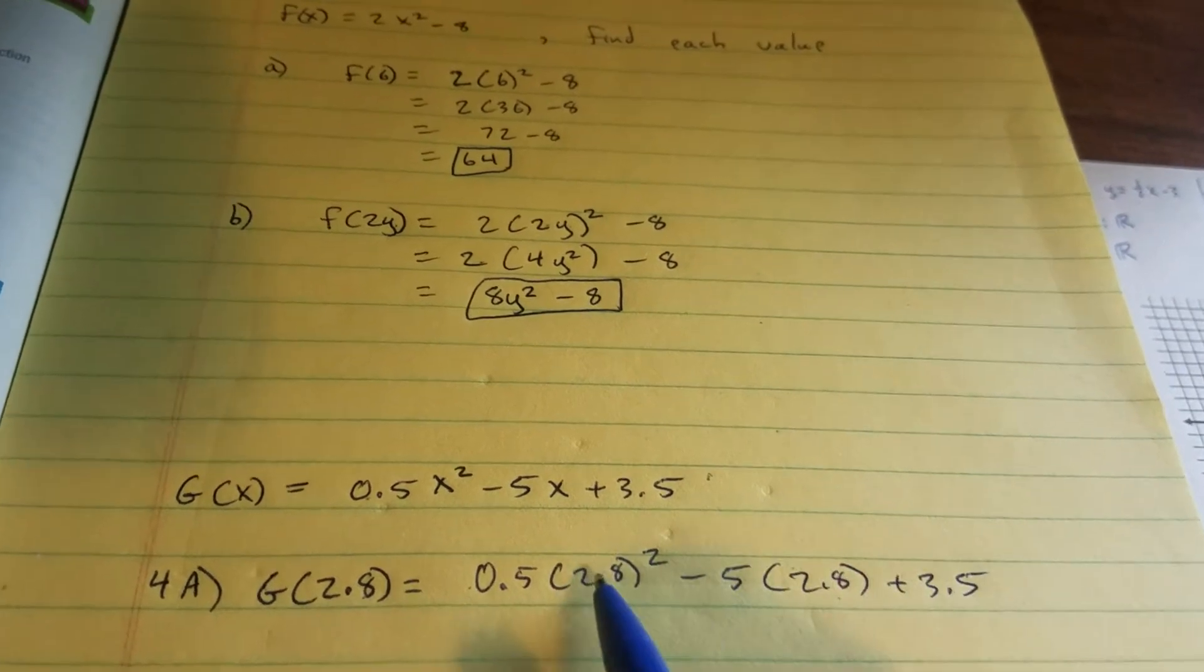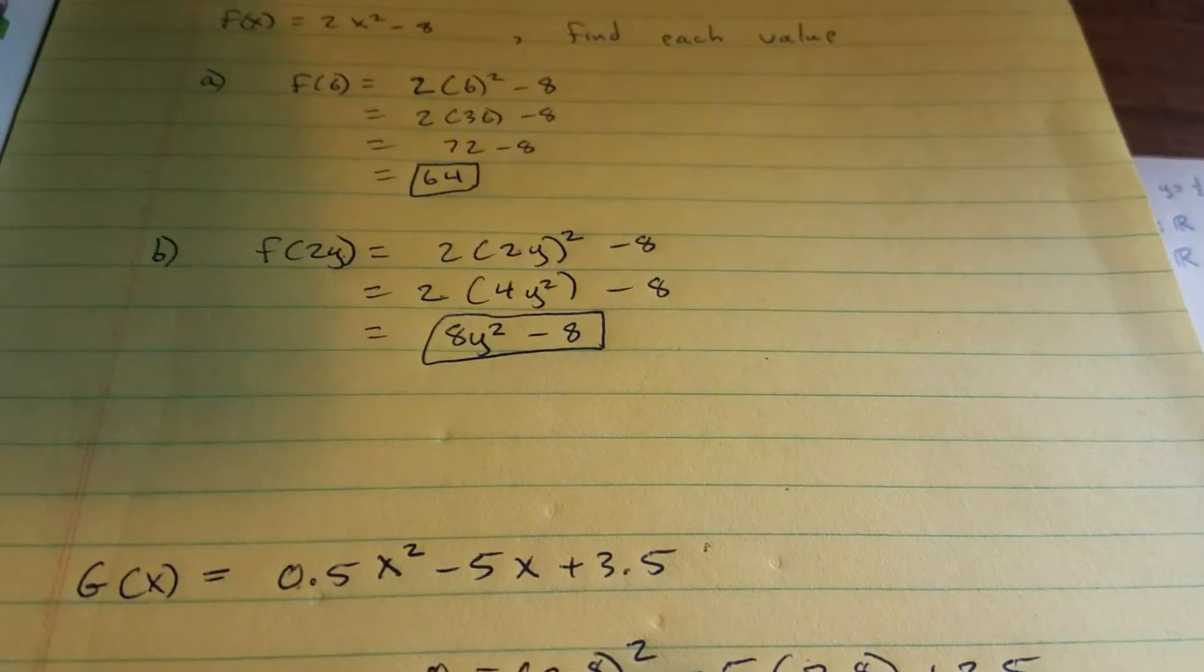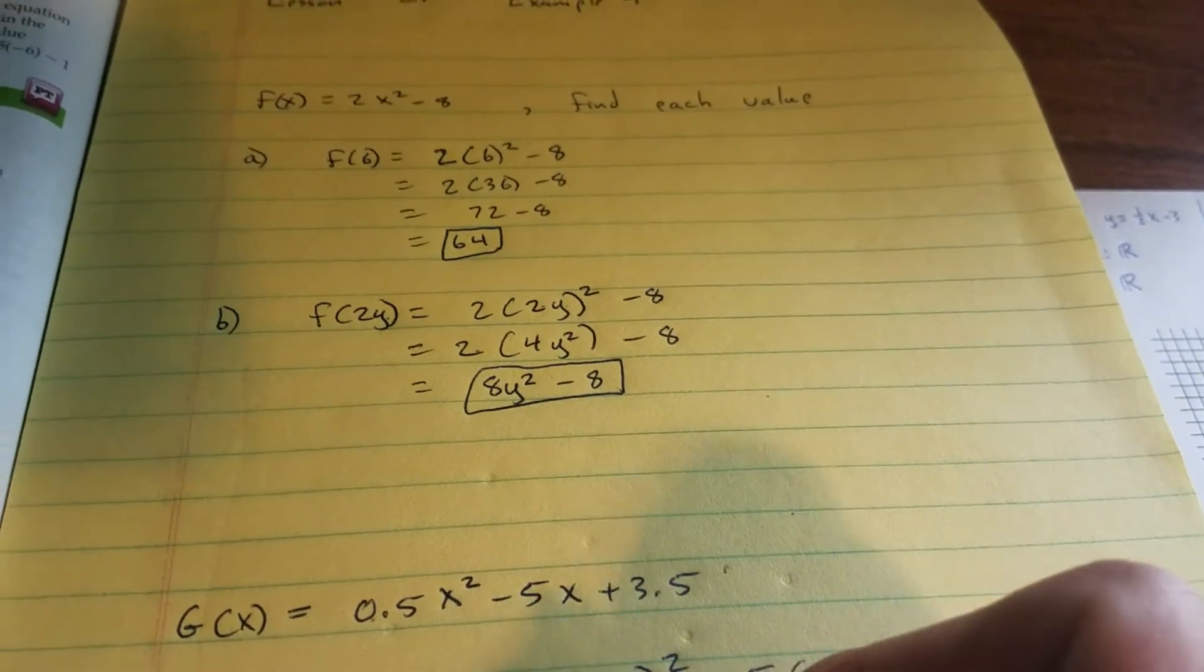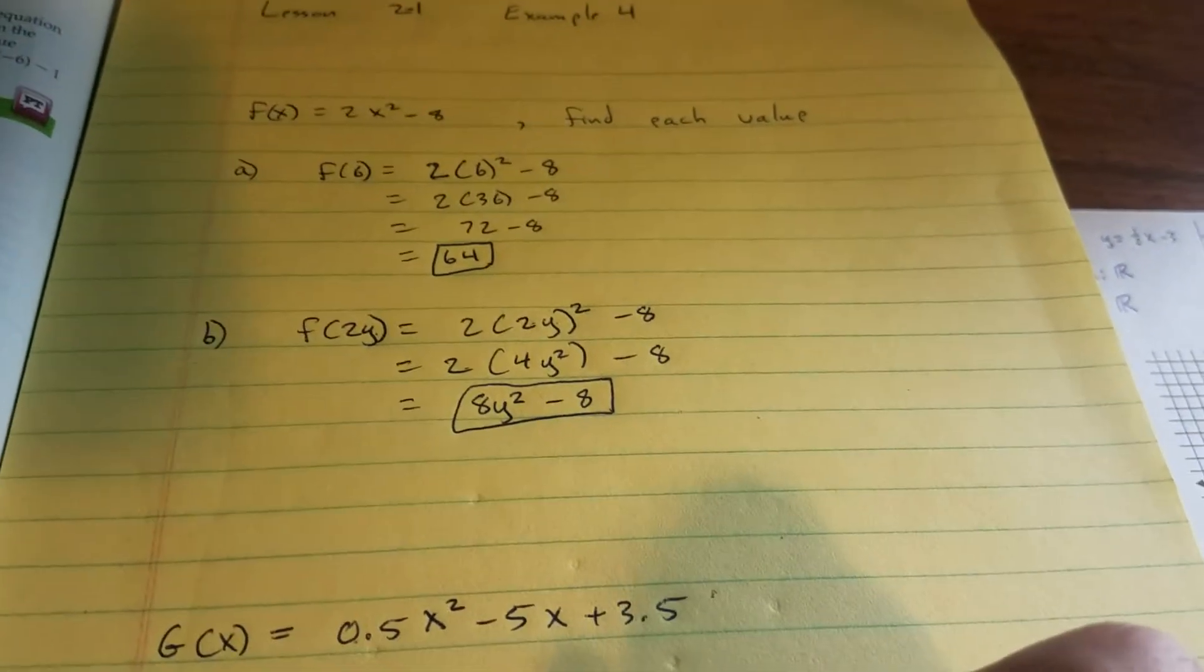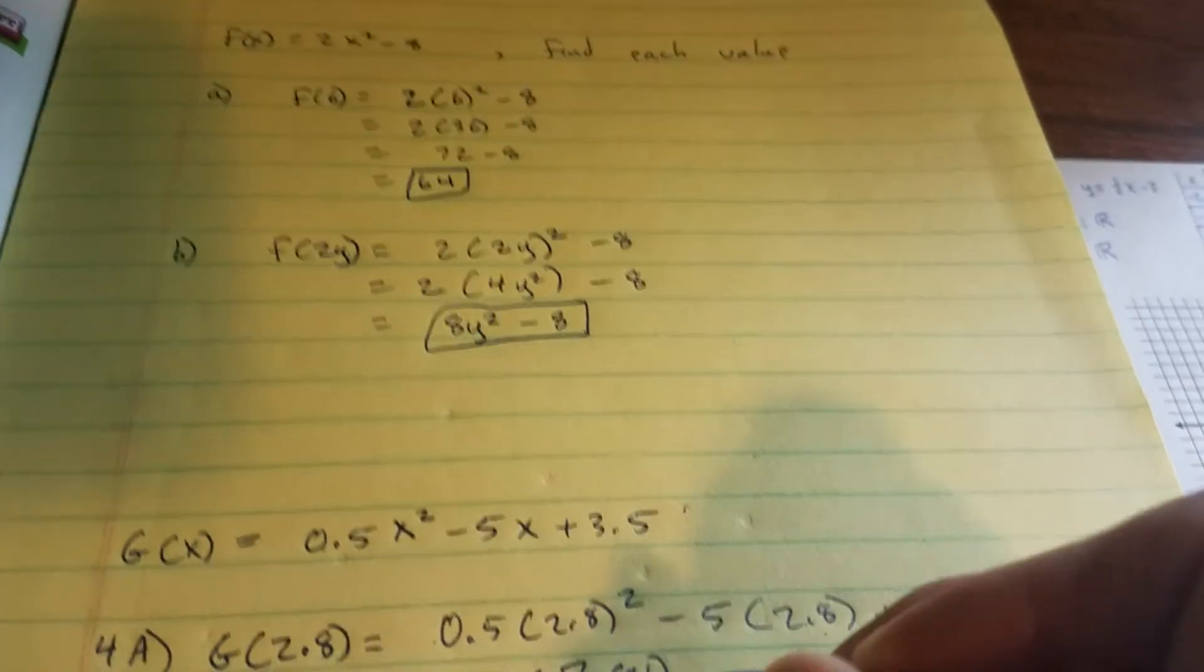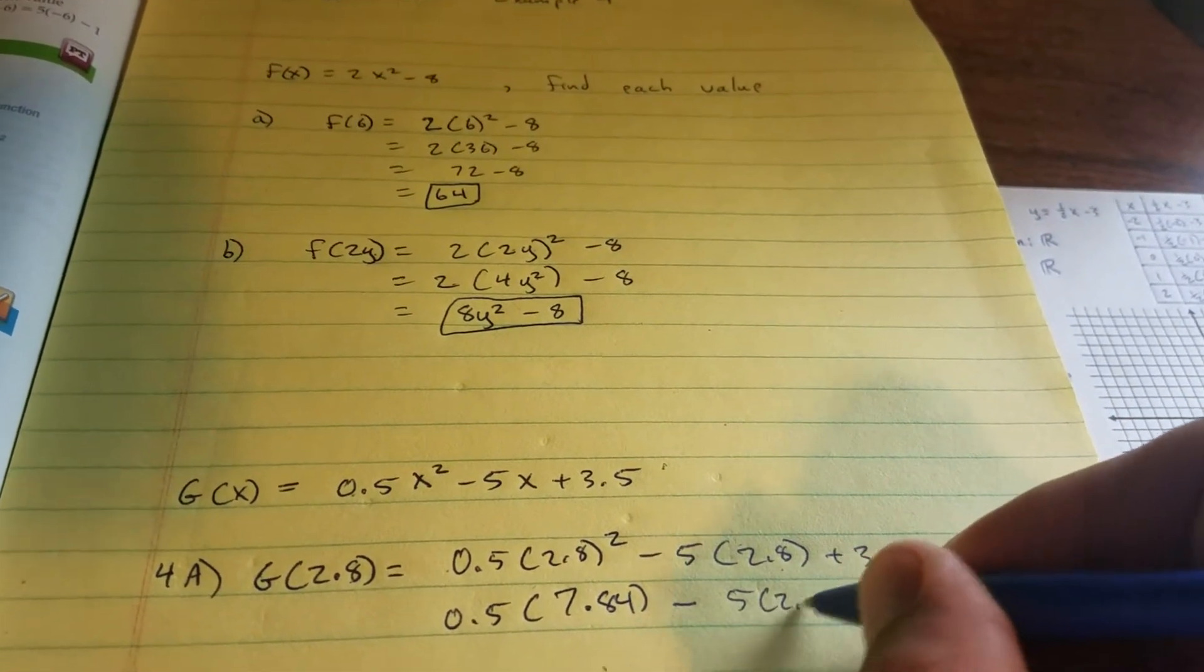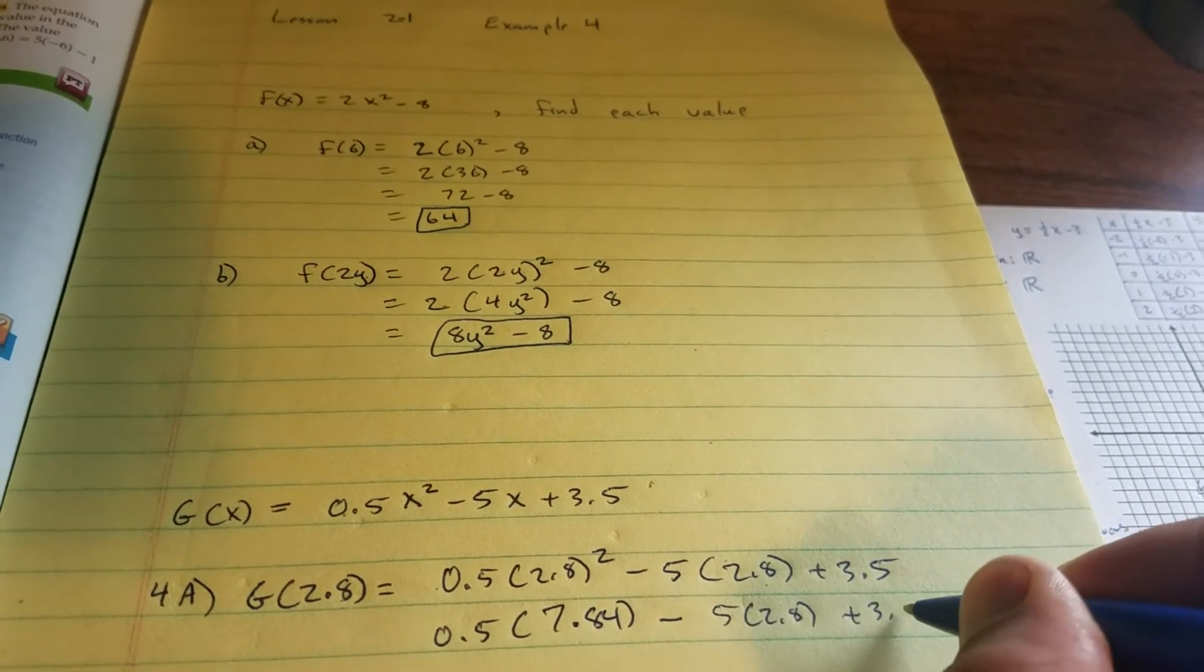Power is first. 2.8 squared is 2.8 times 2.8. So you get 1.5 times 7.84 minus 5 times 2.8 plus 3.5.